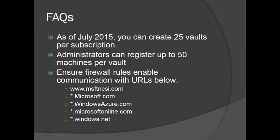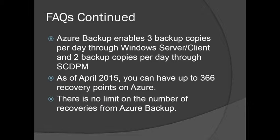You have to make sure that your firewall is in compliance. The following URLs have to be opened up: MSFT NCSI, Microsoft.com, WindowsAzure.com, MicrosoftOnline.com, and Windows.net. These all need to have firewall exceptions put in so that the backups will work properly. By using Azure backups, you can do three backup copies per day through either the Windows server and client, and two by using System Center. As of April 2015, you can have up to 366 recovery points. Make sure you check those numbers before you go and take the exam. There's no limit on the number of recoveries that you can actually have.